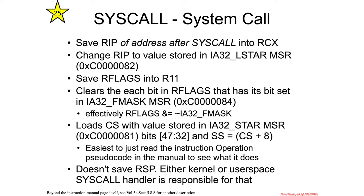So, syscall. How does it work? Well, the first thing that happens when you issue the syscall assembly instruction is that it saves the RIP of the address after the syscall — which is basically the place you're going to return to — into RCX. So it's not pushing on the stack; it saves it into this register. And the kernel is going to be responsible for using that to get back to the RIP.